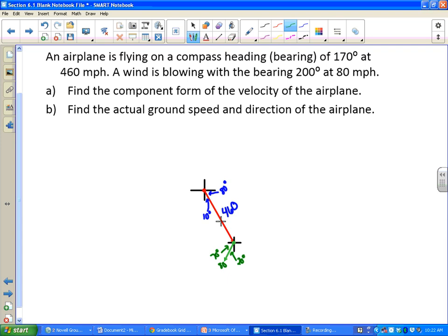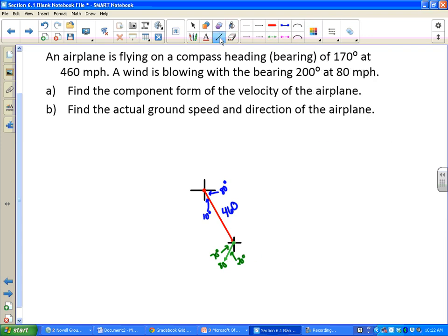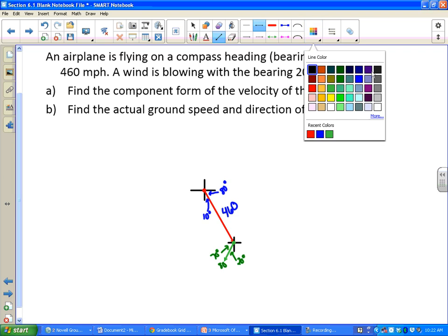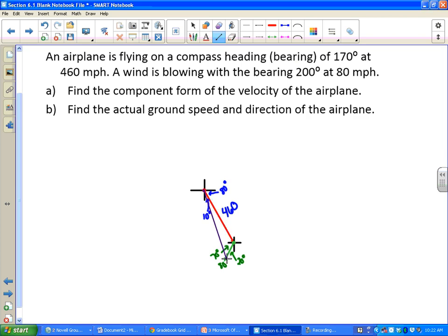The thing that's going on here is that the airplane is trying to fly this direction, the wind is acting on it this direction. If we add these two vectors together, we get the actual speed and the direction that the airplane is going. Basically we end up with a resultant vector that we will make purple, because purple is awesome, that starts here and goes to here.